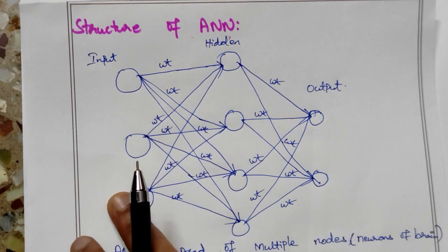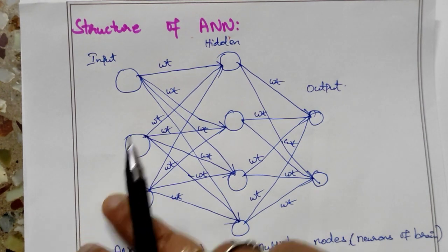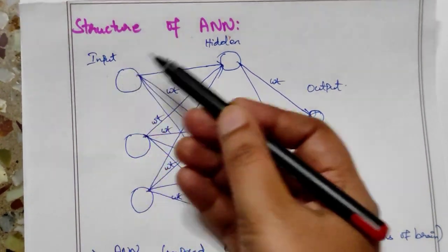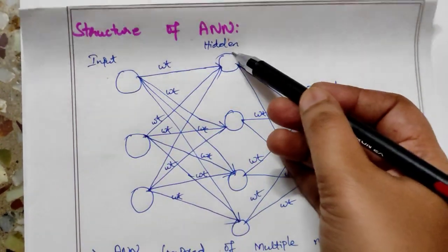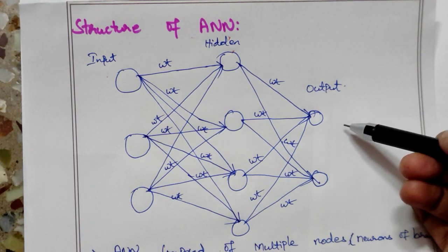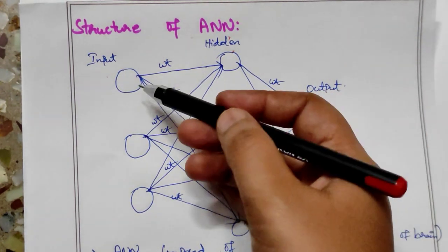In the structure, there are three layers. The first one is the input layer, the second one is the hidden layer, and the third one is the output layer.